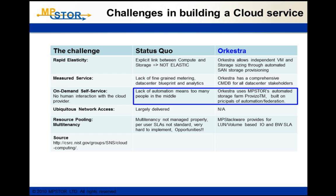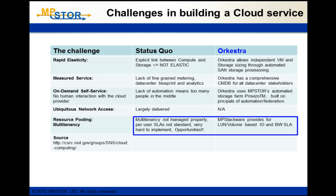For on-demand self-service, the lack of automation in many products has some pretty tough effects for the data center. Orchestra uses an automated storage farm called Proviso. Proviso is built upon the principles of automation and federation, which greatly reduce the data center operational expenditure cost. The storage stack used by Orchestra is based on MPStackware, and that provides quite a lot of features for resource pooling and multi-tenancy.